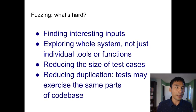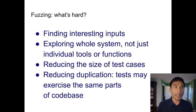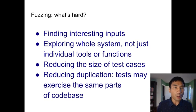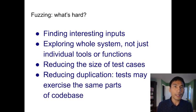There are a bunch of problems that are hard about fuzzing. Finding interesting inputs — the approach is to do it randomly. You want to explore as much as possible a whole system, not just individual tools or functions. If you test randomly, you can very easily get stuck in individual functions and not explore anything interesting about the behavior of the system as a whole. You also want to reduce the size of test cases and reduce duplication, since big test cases slow your fuzzing iteration loop and reduce its power.